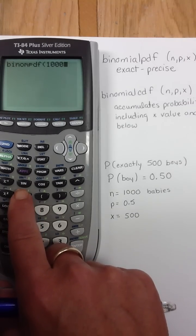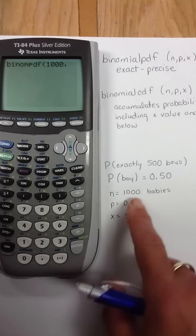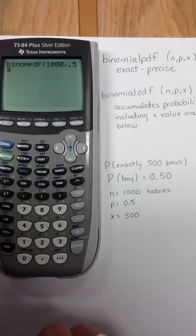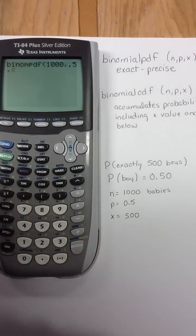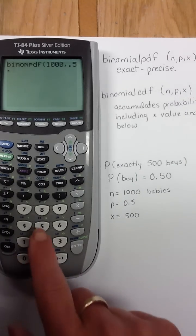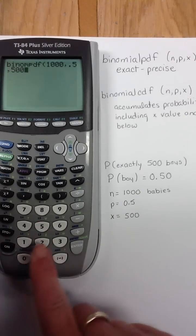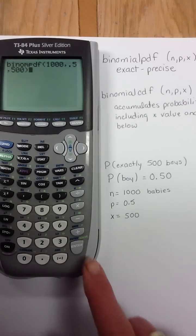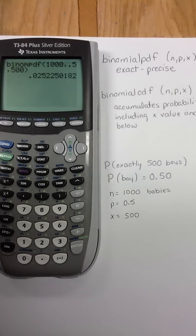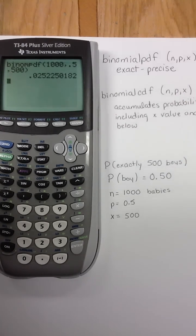Separating them all by commas, the next value is the probability of having the boy in the first place is 0.5. And I'm separating with a comma for my x value. What's the probability of exactly 500 boys? And ending it off. And I know that seems a little weird, but the probability of having exactly 500 boys born in that year is only 2.5%, or 0.025.